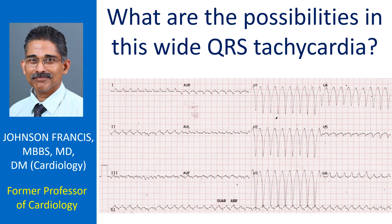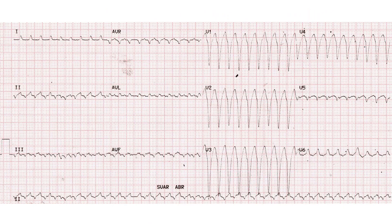What are the possibilities in this wide QRS tachycardia? Wide QRS tachycardia with a rate of around 225 per minute. Wide QRS tachycardia is to be taken as ventricular tachycardia until proved otherwise.